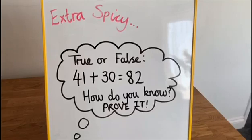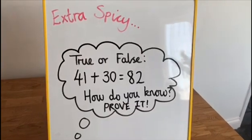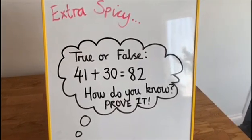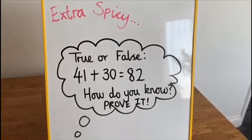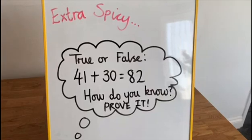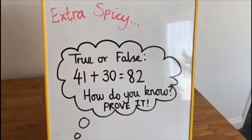Finally, to finish, here is an extra spicy question for you to have a go at. True or false? 41 add 30 equals 82. How do you know? Prove it. Enjoy.